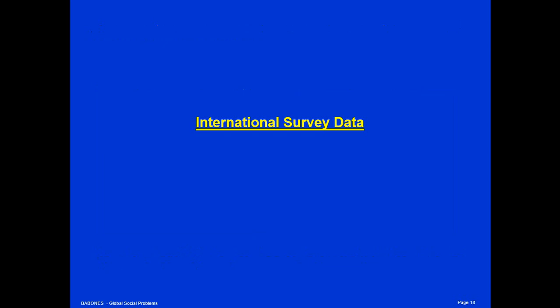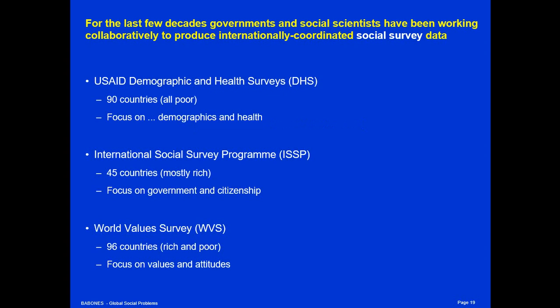In addition to data about countries, the international data infrastructure also includes data about people — surveys that have been standardized and given in multiple countries, sometimes up to 80 or 90 countries with the same survey translated into different languages. There are three major well-known social survey programs that have repeatedly conducted surveys in a global panel of countries over several decades: the USAID Demographic and Health Surveys, which focus on poor countries; the International Social Survey Program, which focuses mainly on rich countries; and the World Values Survey, which has a mix of rich and poor countries and focuses on values.